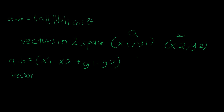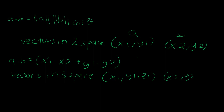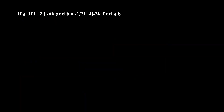If we're given vectors in three-space — (x1, y1, z1) and (x2, y2, z2) — then to compute the dot product between them it's going to be x1 times x2 plus y1 times y2 plus z1 times z2. Now let's do a numerical problem.